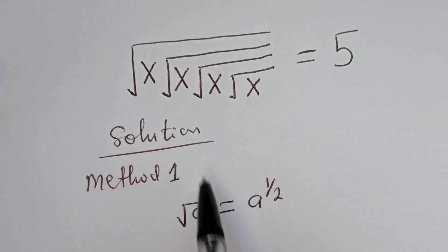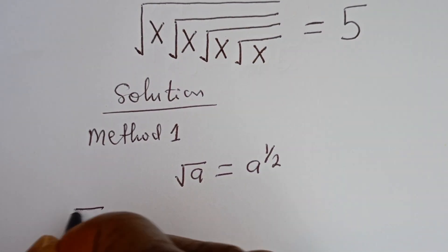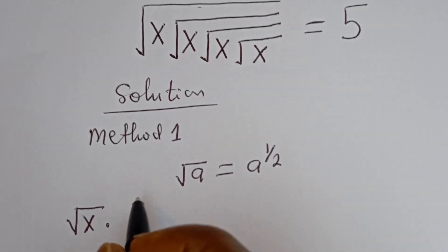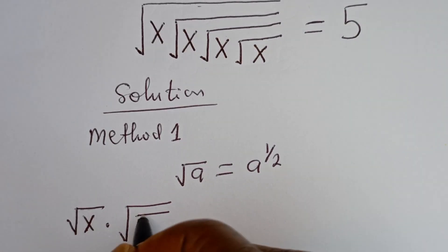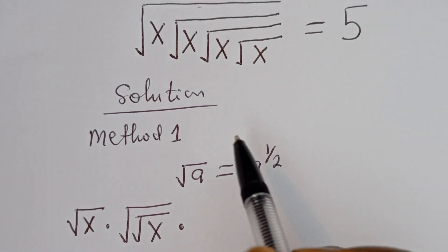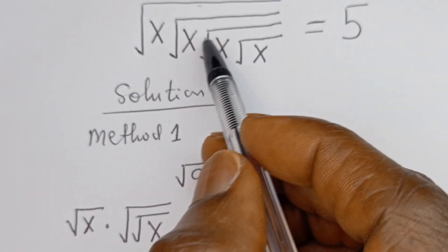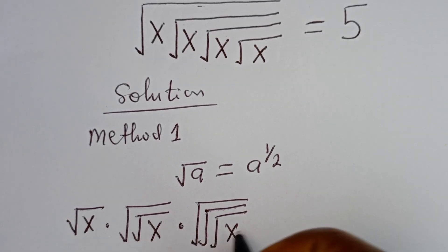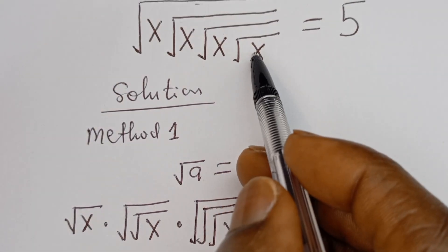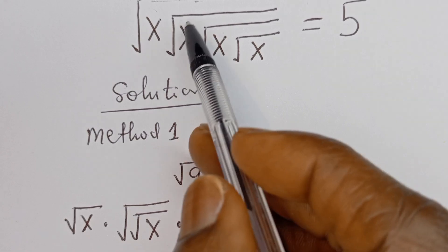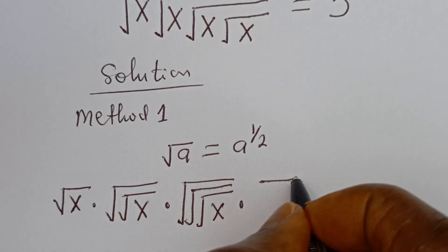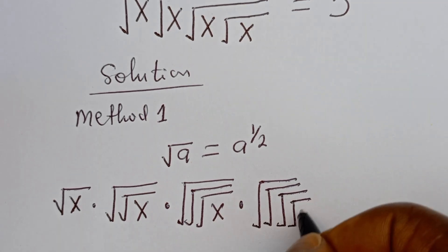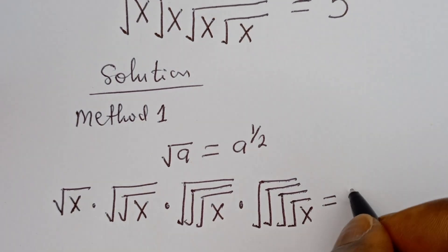Here we have square root of x, the first one, which can be written as square root of x multiplied by the second one, square root of square root of x. The third x is square root of square root of square root of x, and the fourth x is square root of square root of square root of square root of x. All of this is equal to 5.